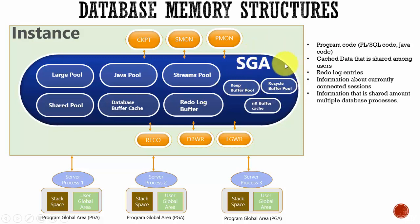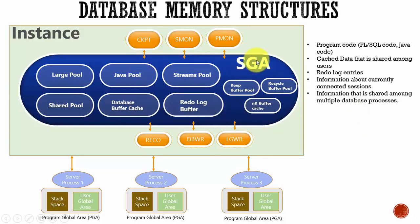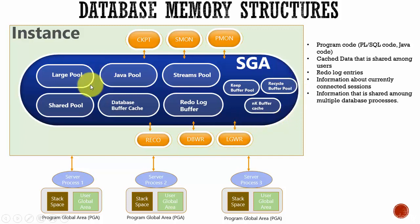Examples of data stored in the Shared Global Area include Program Code, cached data that is shared among the users, redo log entries, information about the currently connected sessions, and information that is shared among multiple database processes. Each of these memory structures within the Shared Global Area helps in storing various information related to the database. The reason it is called Shared is because all the information present in the Shared Global Area is shared by all the processes.